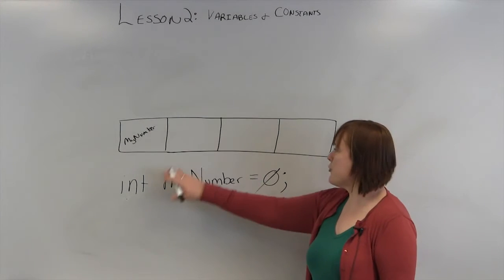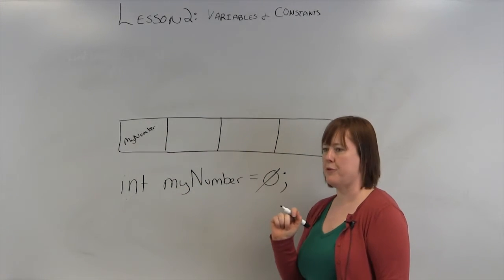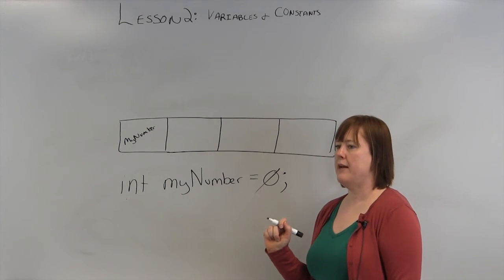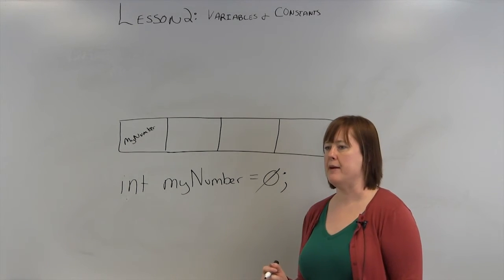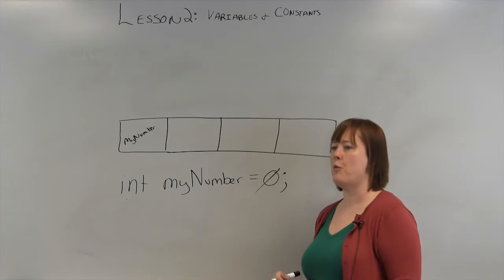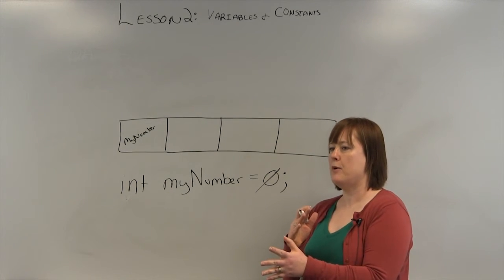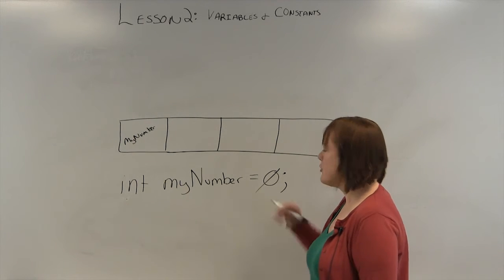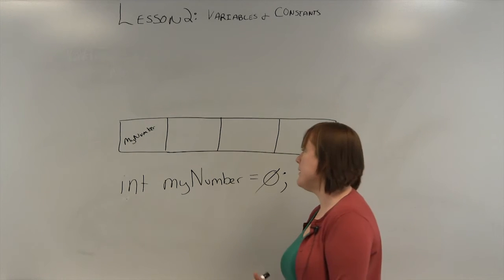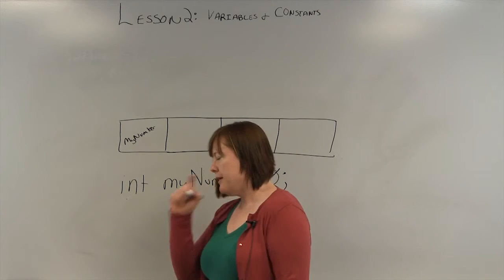Typically, you're going to initialize any numeric item typically to zero. Because you want to make sure it's clear, you want to make sure that there's a number stored in there. Because if you don't do that, and you try to multiply by my number, and my number has TARDIS as a word in there, you can't multiply by a word. So therefore, you want to initialize it to something that's meaningful of the right data type.